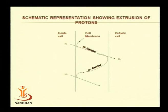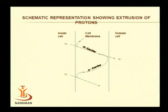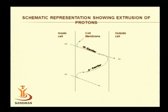Quinones and FAD are hydrogen carriers, while iron-sulfur proteins and cytochromes are electron carriers, and they are alternatively present in the electron transport chain. When an electron carrier donates electrons to a hydrogen carrier, the hydrogen carrier traps protons from the inner side of the cytoplasm. When the hydrogen carrier donates electrons to an electron carrier, protons are released to the outer direction.